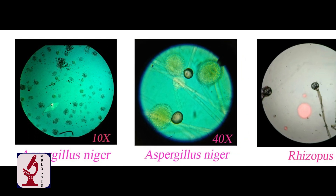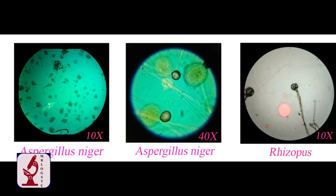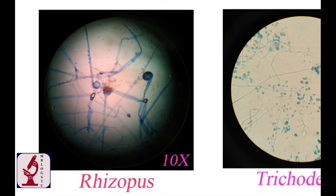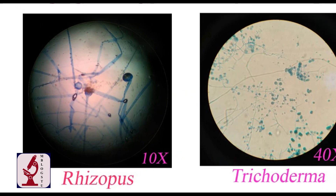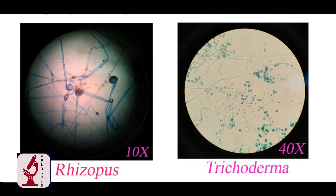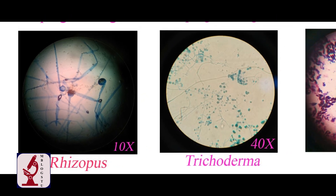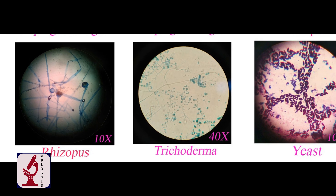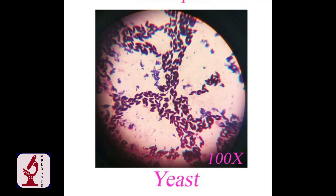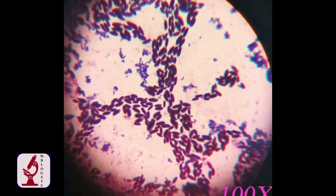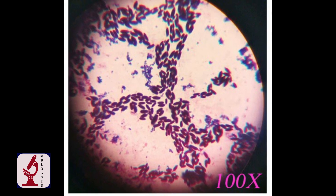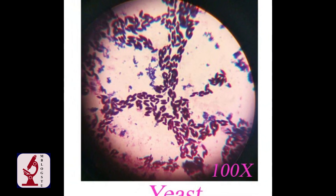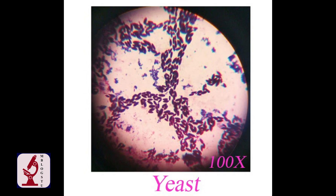Number 4: Rhizopus. Number 5: Trichoderma. This is the gram staining of yeast at 100x in oil immersion — they are gram positive. You can see the purple staining yeast.